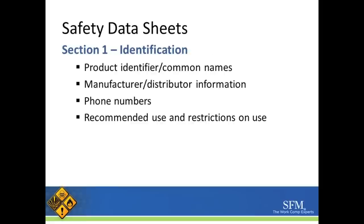The first section is identification. It must have the product identifier and its common names, the manufacturer information, phone numbers, and the recommended use and restrictions on use as well.